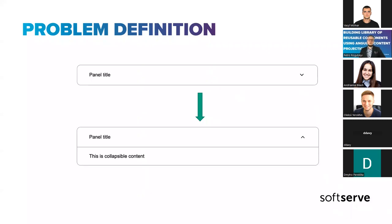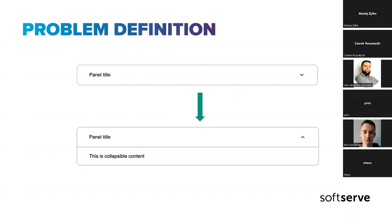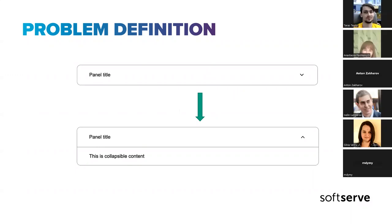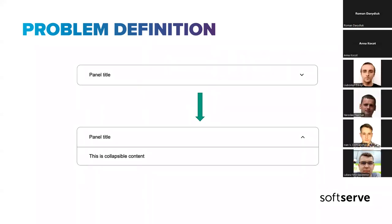Even if you use some external library to provide components, they are usually wrapped with your own code because you need your own settings and stylings. And if you follow a component-based approach for building modern UIs, you need to know how to make your components more reusable, because as our UI is component-based, we have to reuse things well.